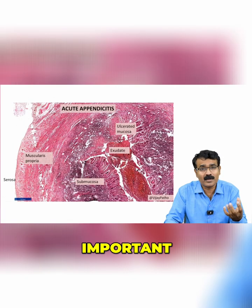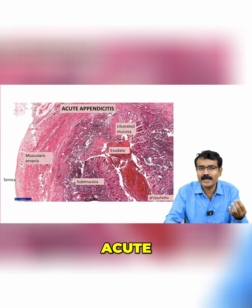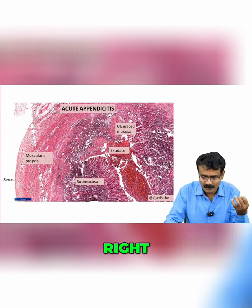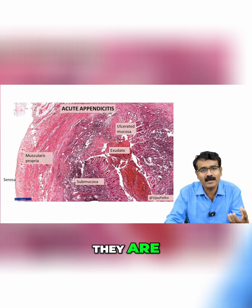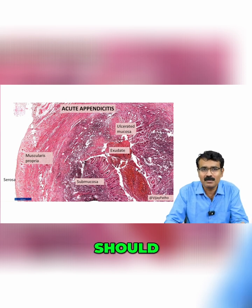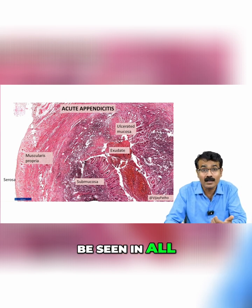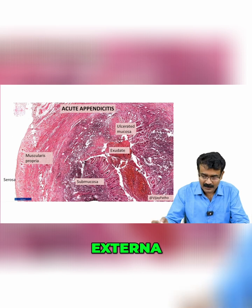The most important identification feature of appendicitis is to demonstrate the presence of acute inflammatory cells, because you are looking at acute appendicitis. What are those acute inflammatory cells? They are neutrophils, and these neutrophils should be seen in all the layers, particularly in the muscularis externa.